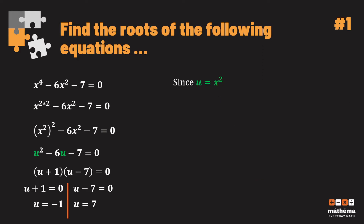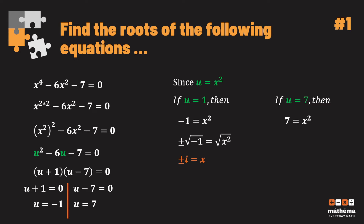Since u = x², if u = −1 then x² = −1, giving x = ±i. Remember that the square root of negative 1 is i. If u = 7, then x² = 7, and extracting the square root gives x = ±√7. So the solutions for this equation are: x = −i, i, √7, and −√7.